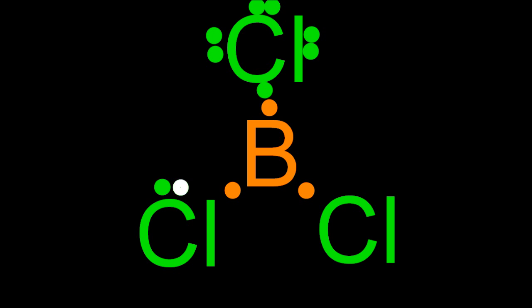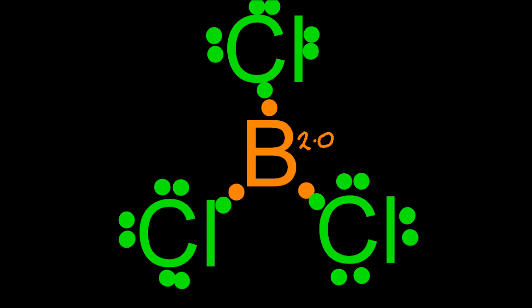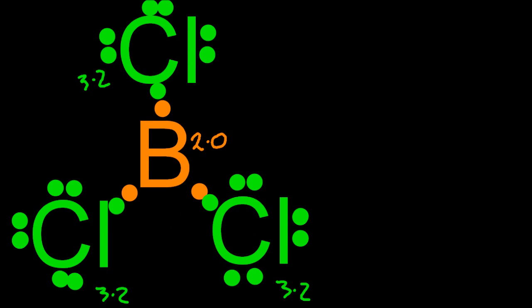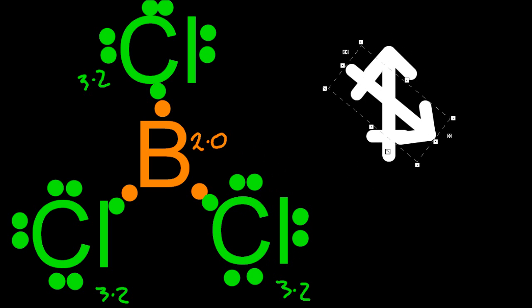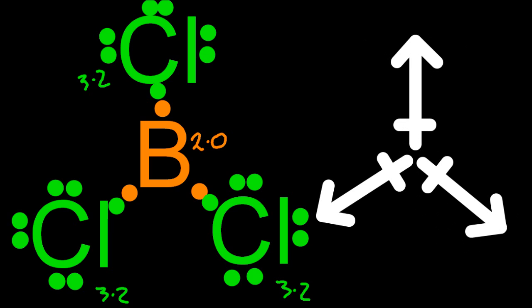Looking at boron trichloride, the actual bonds in this trigonal planar molecule do have a polarity about them. Chlorine loves electrons much more than boron, and so the bonds themselves are polar. If I was to draw out three arrows to represent the polarities of those bonds, you might be able to notice that they actually cancel each other out. Those three bond polarity arrows cancel each other out, so overall the molecule is non-polar even though the bonds themselves are polar. The way you say this in IB is that the molecule is non-polar because the dipoles of the bonds cancel each other out.